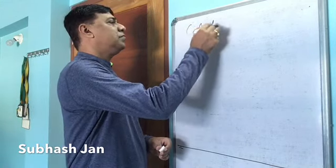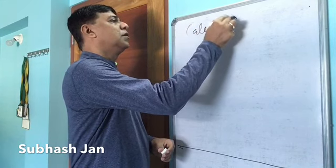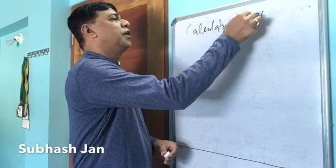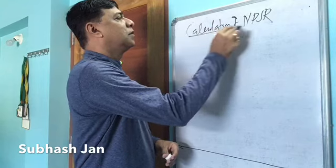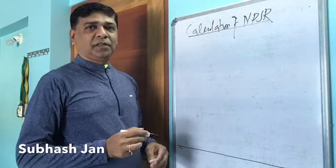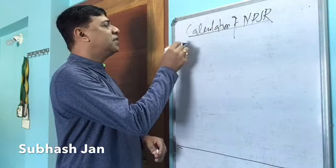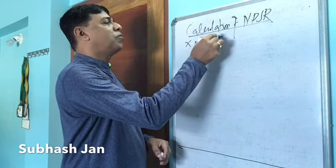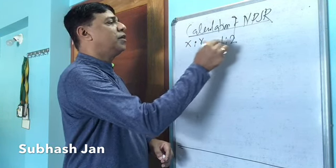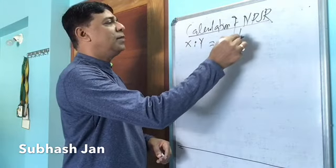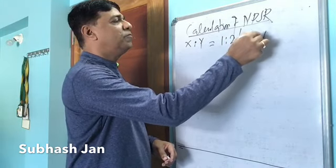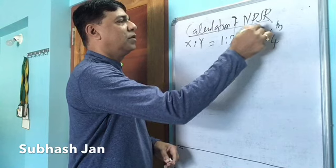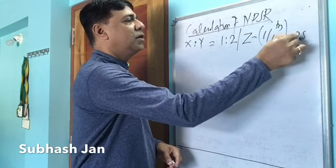Calculation of new profit sharing ratio. Now I am taking a very simple example of a partnership where there are partners X and Y who are sharing profits and losses in the ratio of 1 to 2. Now they admitted Z into their partnership for one-fourth share. One-fourth share is nothing but 25%. I hope this you know.